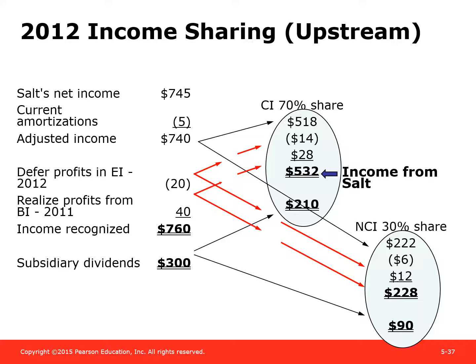In the 2012 graphical representation, SALT's net income is $745, less the building amortization only — the inventory was fully amortized in 2011. Deferred profits on ending inventory for 2012 and realized profits from beginning inventory of 2011 are split 70-30 between controlling and non-controlling interest since this is upstream. The income from SALT recognized by the controlling interest is $532, which will be eliminated in the consolidated financial statements. Subsidiary dividends are also allocated by ownership percentages.